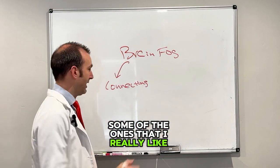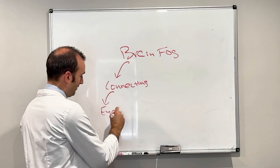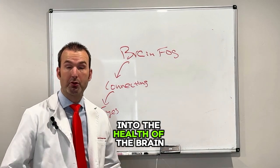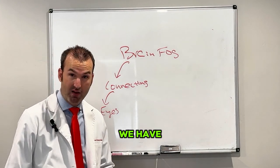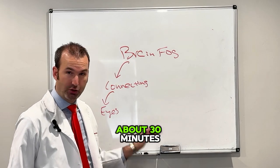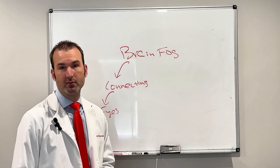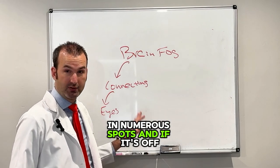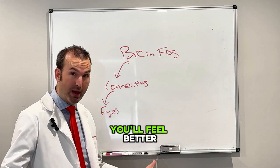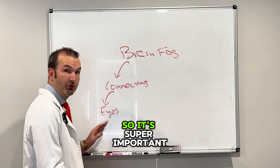Some of the ones that I really like are eye movements. Our eyes are one of the best windows into the health of the brain we have. We can map these out over about 30 minutes and tell you what's happening throughout your brain in numerous spots. And if it's off, we can predictably rehab it and you'll feel better. Eyes — super important.